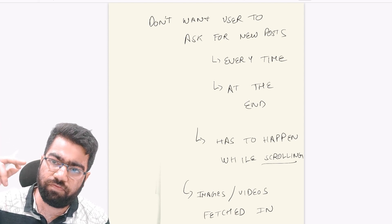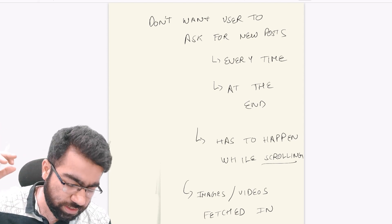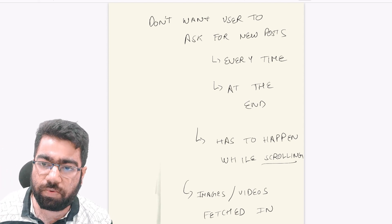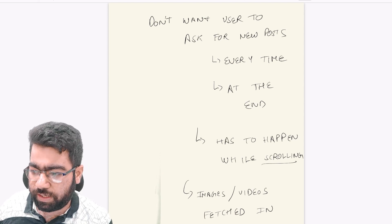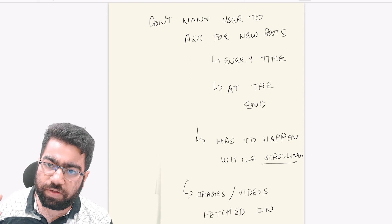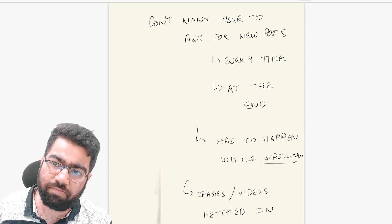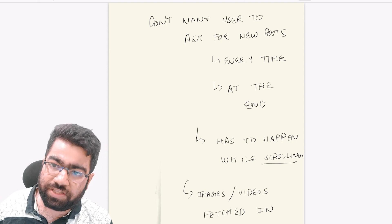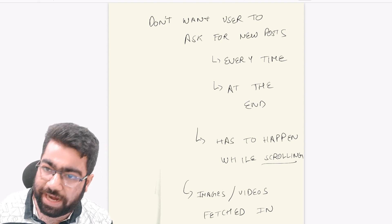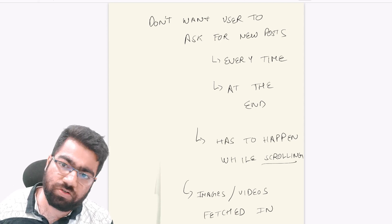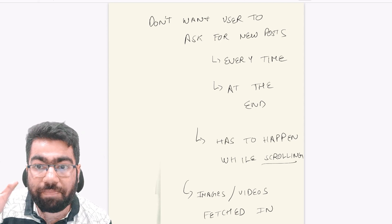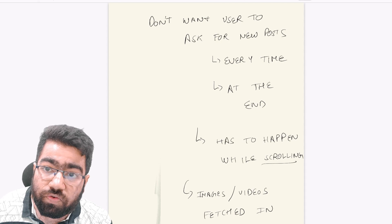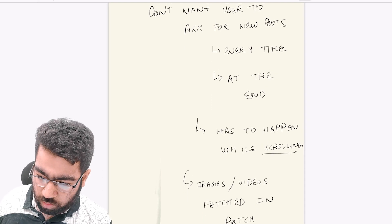Another thing to consider: suppose you are scrolling your Instagram feed on the web app — not the Android app. Instagram has an infinite feed, meaning you don't have to press refresh every time; it loads itself. How does that happen? You basically have to fetch certain resources as soon as the user reaches the end of the feed. All of the feed is not fetched instantly — it must be batched into various intervals.